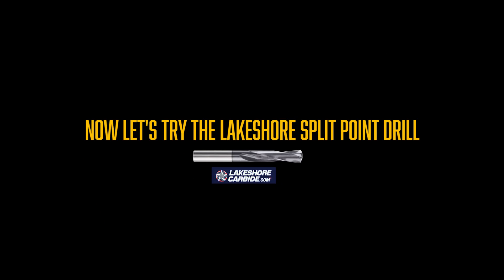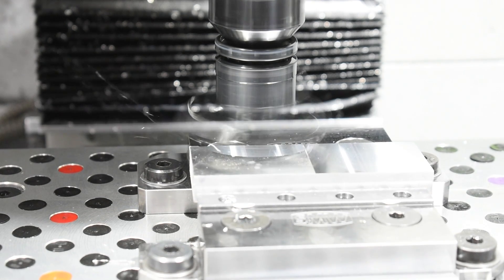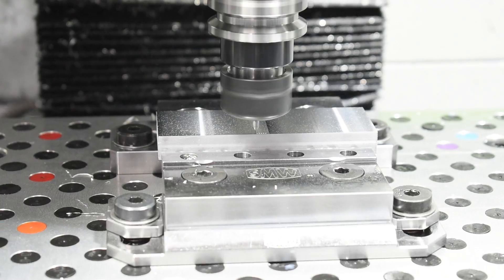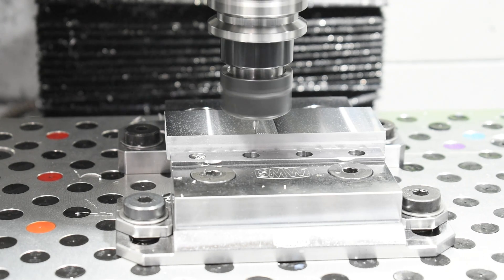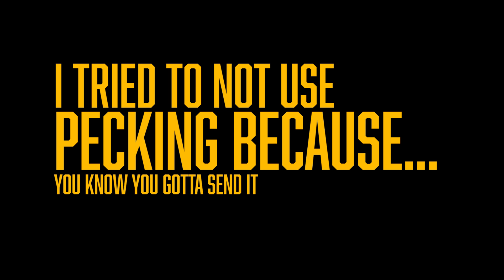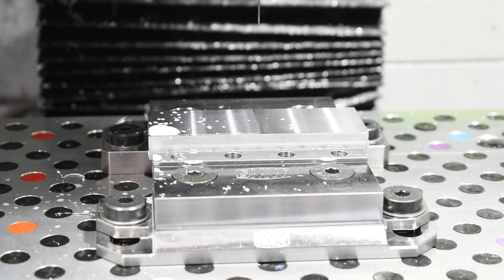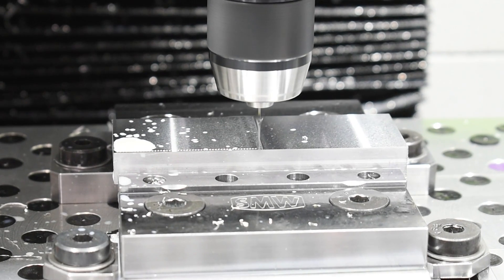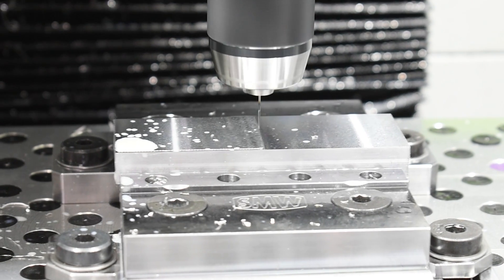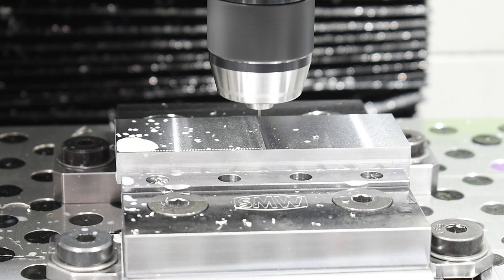Next up the Lakeshore carbide 1/32nd carbide drill and we faced it with the superfly and then we spot with the Lakeshore carbide center drill at a depth of five thou. I tried to not use pecking because you know you got to send it a little bit right. Didn't work and even though I lowered the feed per rev to five tenths per rev that drill broke almost immediately.